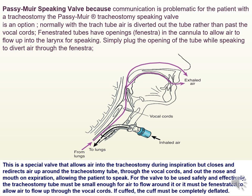Because communication is a problem for patients with a tracheostomy, the Passy-Muir tracheostomy speaking valve is an option. Normally with a trach tube, air is diverted out of the tube rather than past the vocal cords. Fenestrated tubes have openings, or fenestra, in the cannula that allow air to flow up into the larynx for speaking — the patient simply plugs the opening of the tube while speaking to divert air through the fenestra. This special valve allows air into the tracheostomy during inspiration, then closes and redirects air up around the tracheostomy tube through the vocal cords and out the nose and mouth on expiration, allowing the patient to speak. For safe and effective use, the tube must be small enough for air to flow around it or be fenestrated, and if cuffed, the cuff must be completely deflated.